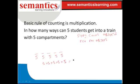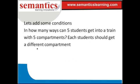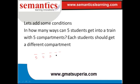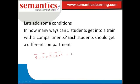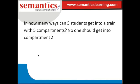Now consider the variation where each student must be in a different compartment. Put five dashes. The first person can be placed in five ways. The second person can only go in four ways — they can't share a compartment with the first. The third person has three ways, the next two ways. So the answer is 5 × 4 × 3 × 2 × 1 = 120.